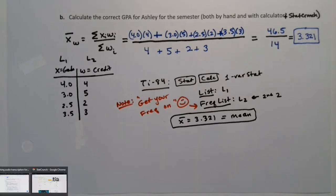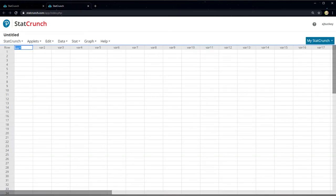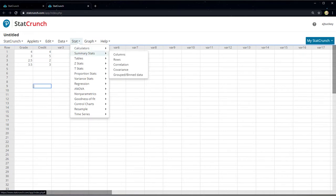Now what about StatCrunch? It should be pretty straightforward, and it is. I'll just open StatCrunch. You have to make the table just like you did in the calculator, but it should be relatively easy. If I call this X, for example, and then 4, 3, 2.5, and 3.5, and then call these W for the weights - you can call them whatever you want - 4, 5, 2, 3. You could call them grade and credit too. This is grade, this was credit.